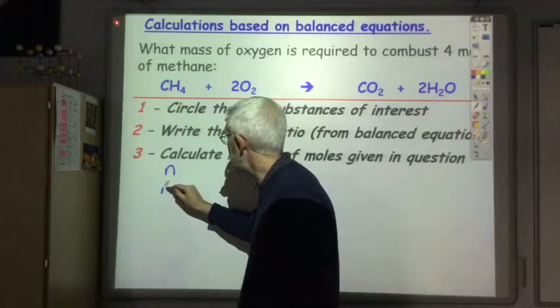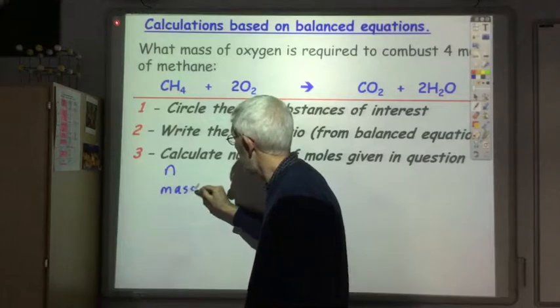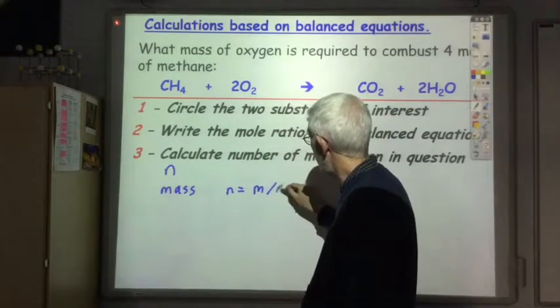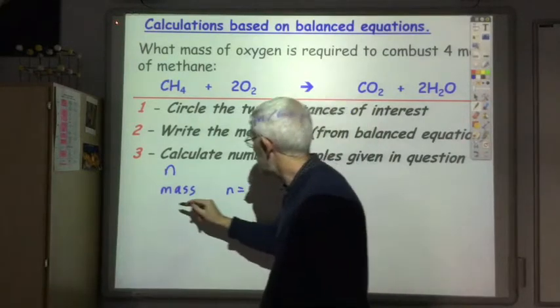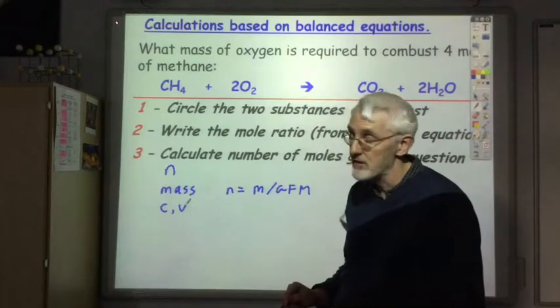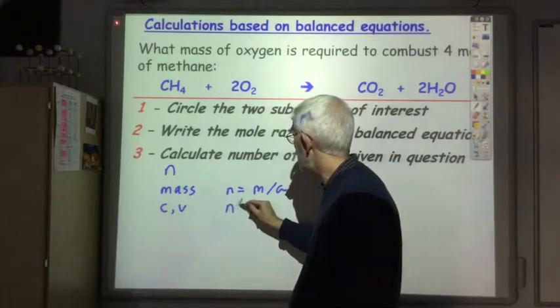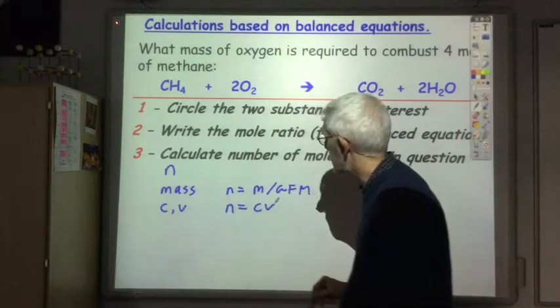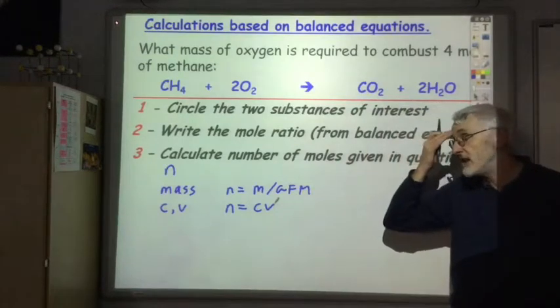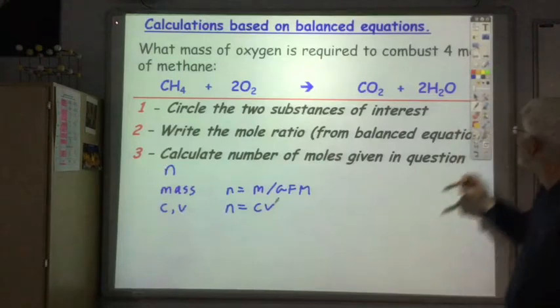Sometimes you'll be given a mass and use n equals mass over GFM to work out the number of moles. Sometimes you'll be given a concentration and volume of a solution, in which case you'll use the equation n equals CV to work out the number of moles. So this is where the questions will deviate. You'll use one of these three methods for part three.